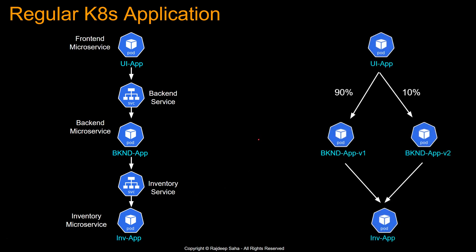Now let's say you deployed a new version of the backend app and you want to do canary with it. So you have backend application version one with some pods running, and backend application version two — the newer version — with other pods. In the beginning, you only want 10% of the traffic from the UI app to go to version two, and the rest to version one, which is the stable version. Then after some time, if things look good, you want to shift all traffic to version two.